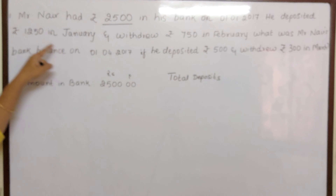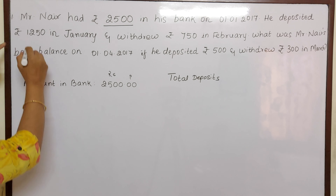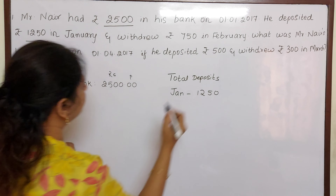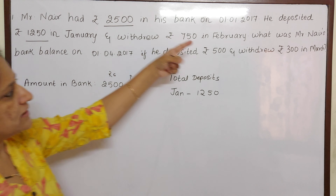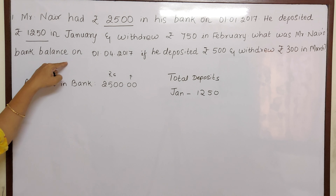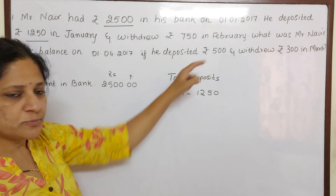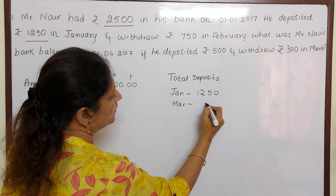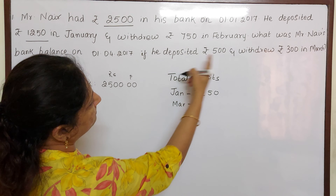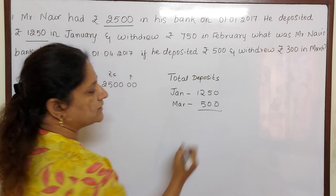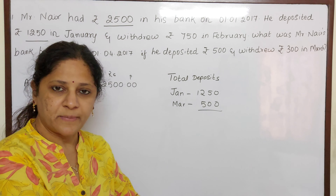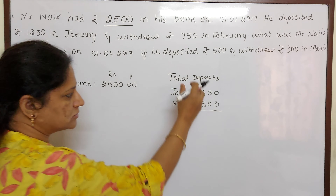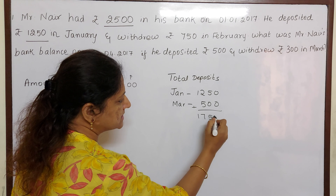So here we will calculate total deposits. He has deposited Rs. 1250 in January. And in March again he has made a deposit of Rs. 500. Children, deposits means money going inside the bank — you are depositing some money, so your money will increase in the bank. So the total deposits is Rs. 1,750.